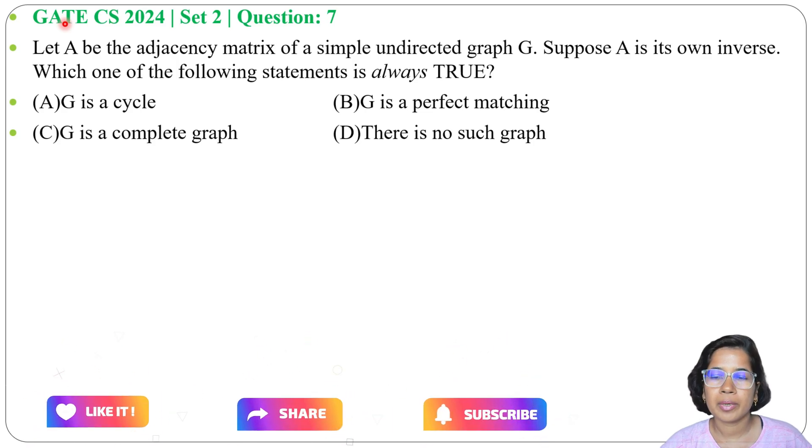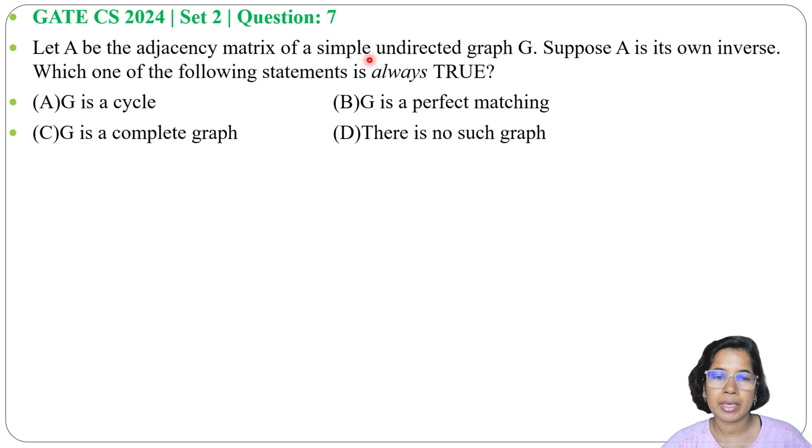Let's solve one previous question of graph theory. This question was asked in GATE year 2024 set 2, question number 7. Let A be the adjacency matrix of simple undirected graph G. Suppose A is its own inverse, which one of the following statements is always true? Four options are given.